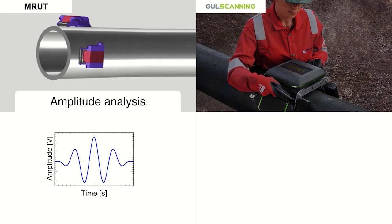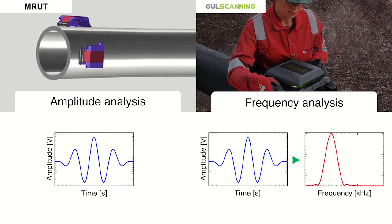This is because GUL scanning's signal processing method goes beyond conventional amplitude measurements by using advanced frequency-based analysis that directly gives quantitative, reliable, and accurate pipe wall thickness data.